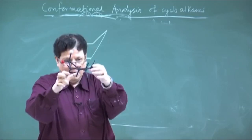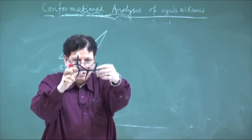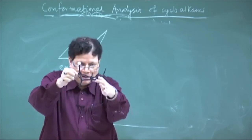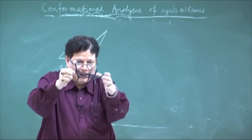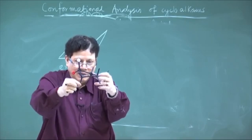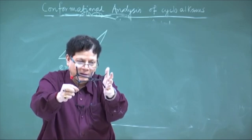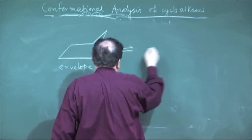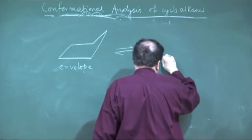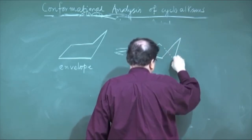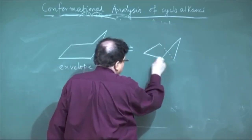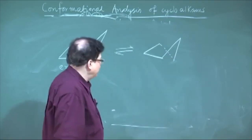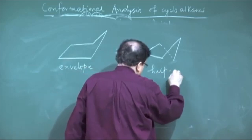It can also adopt another conformation called the half-chair conformation, which also has less torsional strain. In the half-chair form, three carbon atoms are in the plane, one carbon is above that plane, and the fifth carbon is below that plane. So in the half-chair conformation: three carbons in the plane, one goes up, and the other goes down.